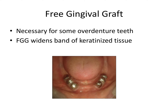The next procedure is a free gingival graft. This is a periodontal plastics procedure necessary for some implants supporting a denture or overdenture teeth. A band of keratinized tissue is important in this scenario — a free gingival graft widens the band of keratinized tissue around implants or teeth. Keratinized tissue is important because it's firmer, whiter tissue that enables better oral hygiene. It's not as sensitive to brushing as non-keratinized mucosa, and it doesn't collect bacteria and plaque as easily.